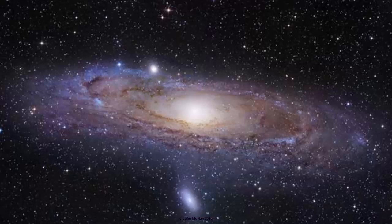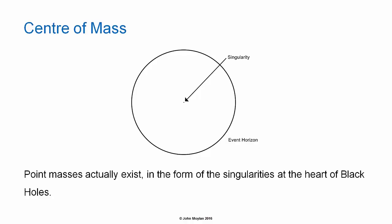If an object or system of objects are far enough away, they behave in terms of their gravitational field as a point mass. The illustrated example here is the Andromeda galaxy. So an object that is far away — the irregularities in the gravitational field of that object tend to average out, so that it actually behaves as if it was in fact a point mass. Point masses actually do exist in the form of the singularities at the heart of black holes. A singularity is a point in which all of the mass of the black hole has become so compacted that it no longer actually occupies any space.